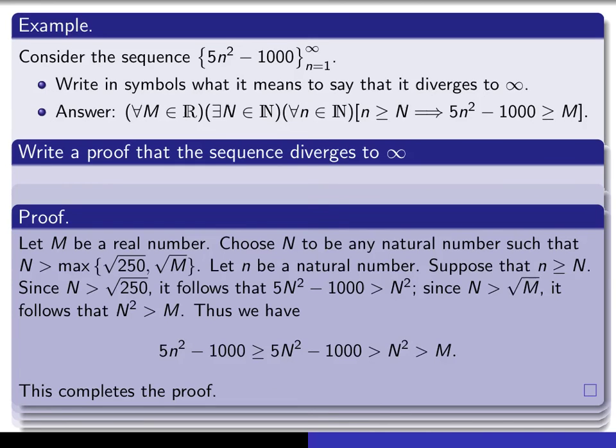Okay, here's the proof. Follow along here as I read what I've written. The first sentence should be: let M be a real number. And now, choose capital N, choose a natural number capital N, such that N is bigger than the maximum of root 250 and root M. That's the calculation that we did on the previous page. Then we see here that we should next write: let little n be a natural number.